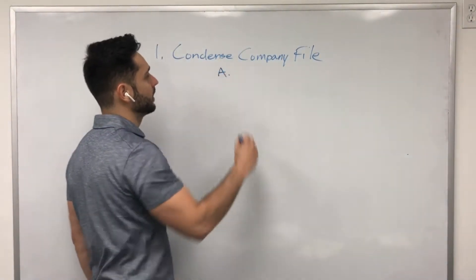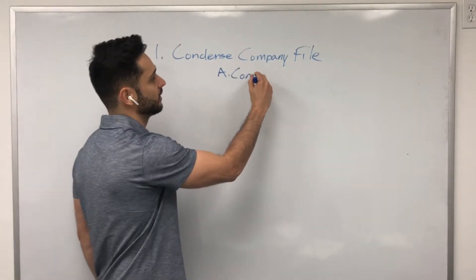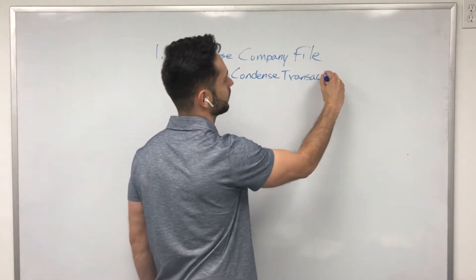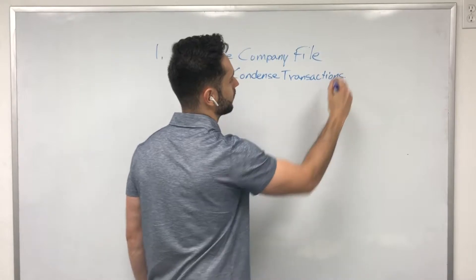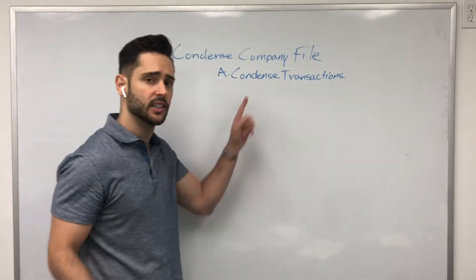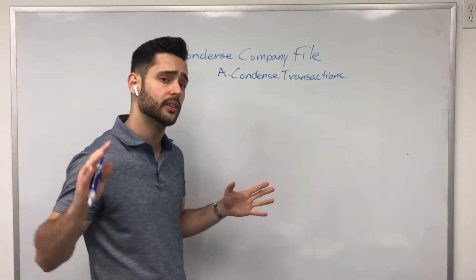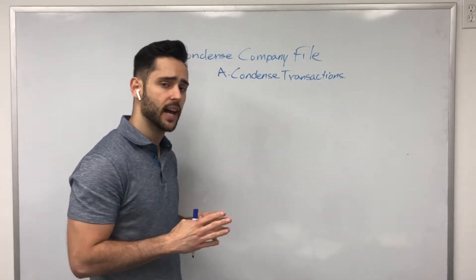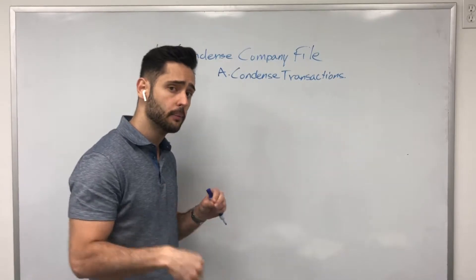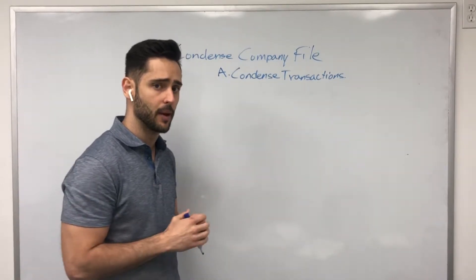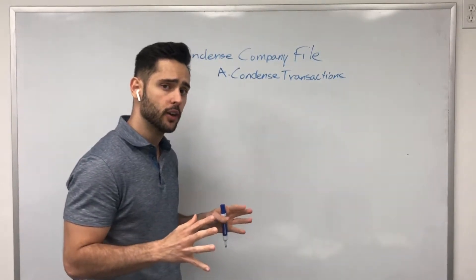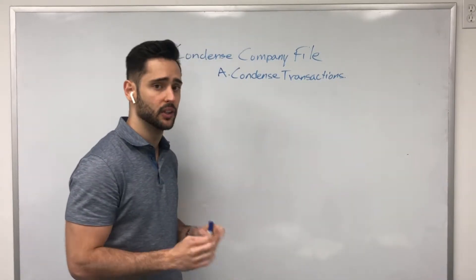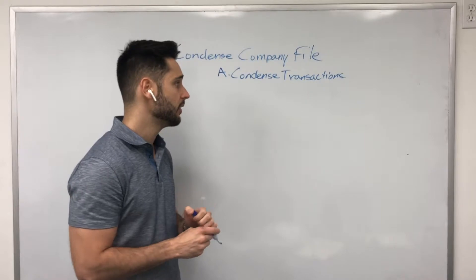The first way is you can just click condense transactions. When you condense the transactions, basically what QuickBooks will do is it'll go into years prior to this one, go to all the closed transactions and remove the details and update the journal entry with just a dollar amount. It'll remove all of the line items on the invoice, which will dramatically reduce the size of the company file. That's A.